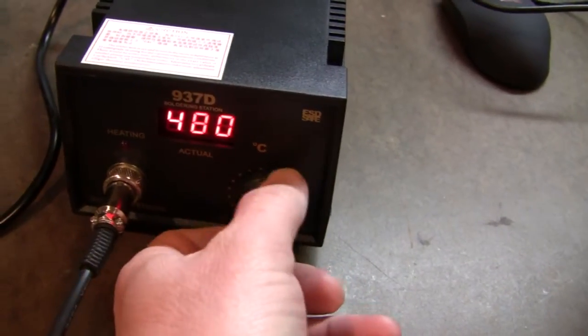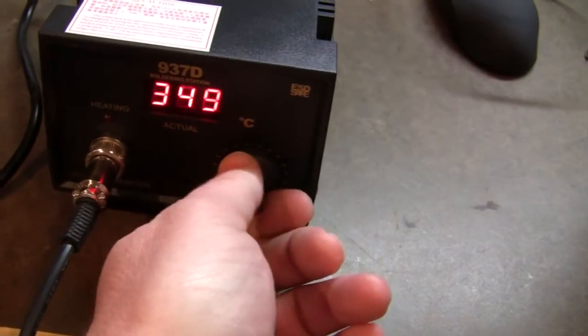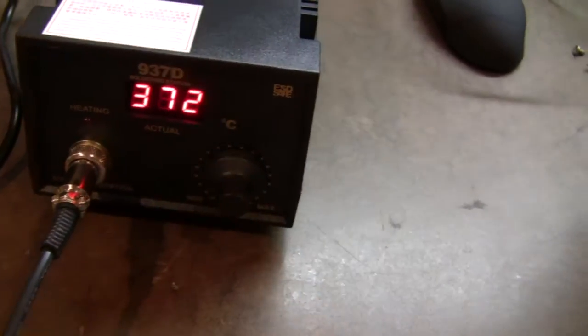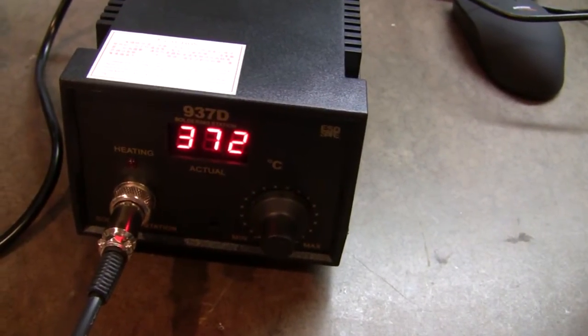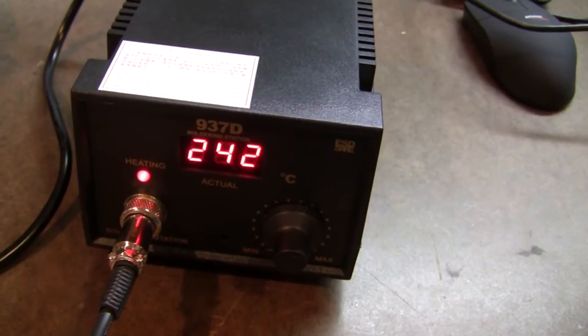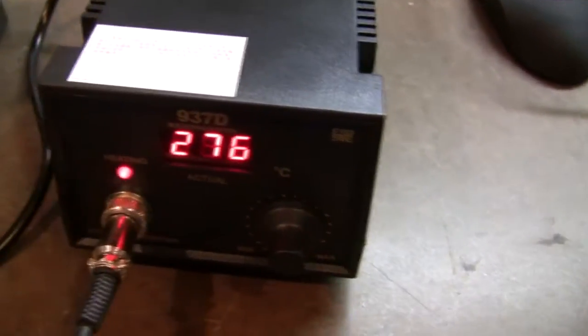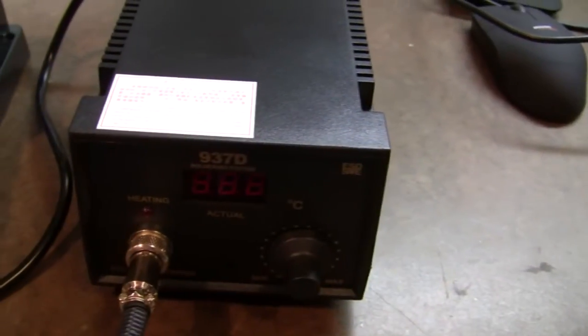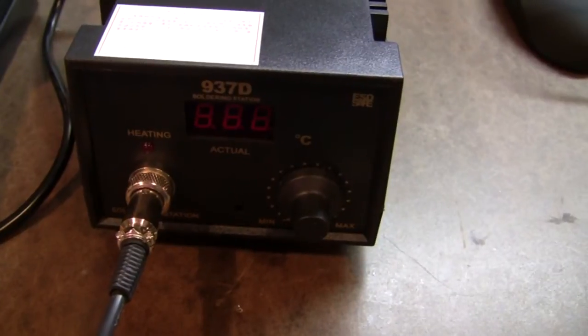The instruction manual here is a cheap xerox manual, but it actually doesn't really have any Chinglish in it to speak of, seemed okay to me. Here's the unit, nothing horrible on the outside that I can see. Turn the thing on and it's pretty nice. You just do your set point here, 200 to 480, and after you leave it alone for a second it goes down to actual temperature. It does have a sense on the soldering iron.